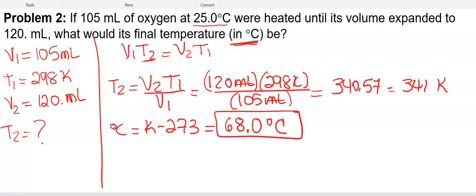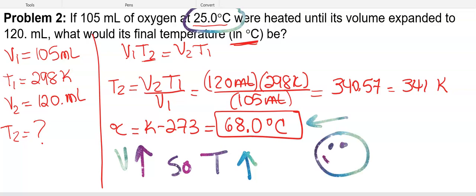Now, switching to my fancy rainbow pen, what happened here? Our volume went from 105 to 120. So our volume went up. So that means that our temperature had to go up. And our temperature started at 25 and ended at 68. Life is good. Ms. Augustine draws her happy face. And we are done for now.